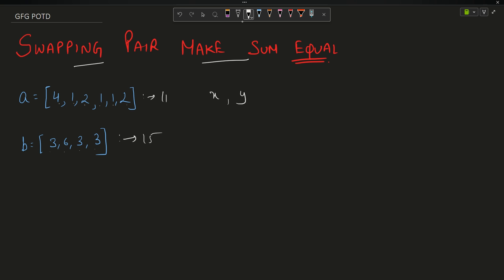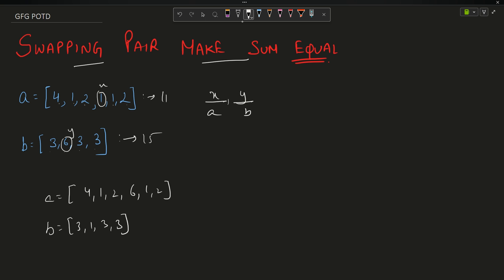I want to select two elements x from A and y from B and swap them. For example, if I select x = 1 and y = 6, array A becomes [4, 1, 2, 6, 1, 2] and array B becomes [3, 1, 3, 3]. The new sum of A is 16 and the new sum of B is 10, so they are not equal in this case.